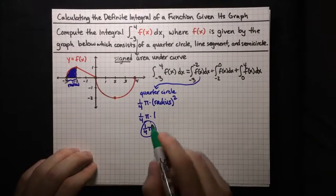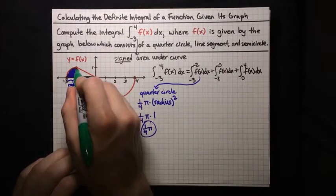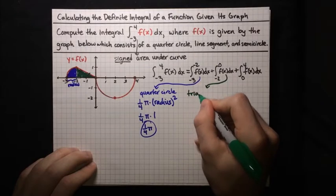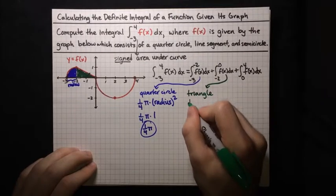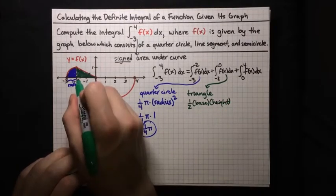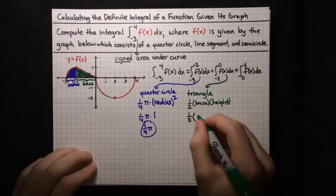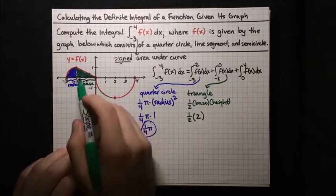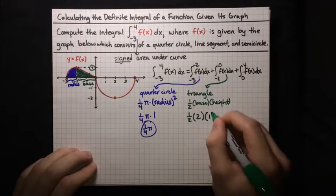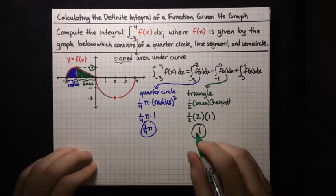The second integral goes from negative 2 to 0, which is just this triangle. The area of a triangle is one-half times base times height. The base runs from negative 2 to 0, so its length is 2. The height goes from the x-axis up to y equals 1. So one-half times 2 times 1 equals 1. That's the value of the second integral.